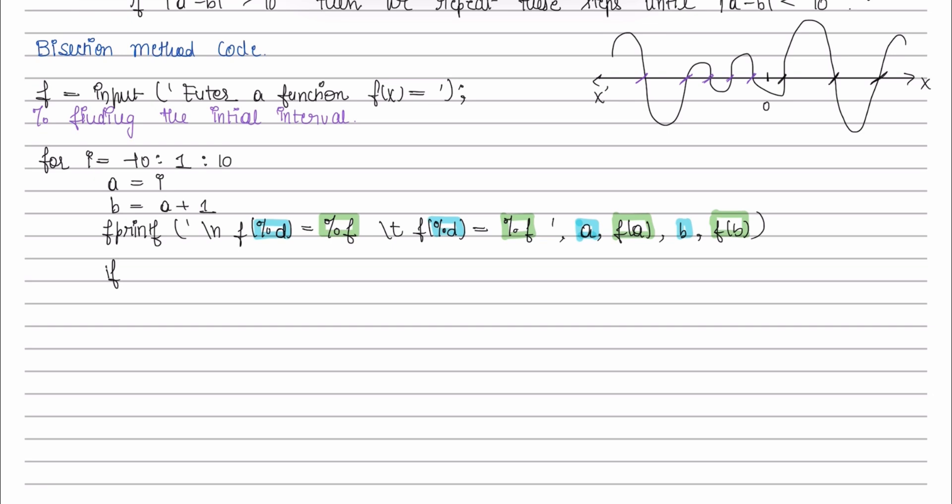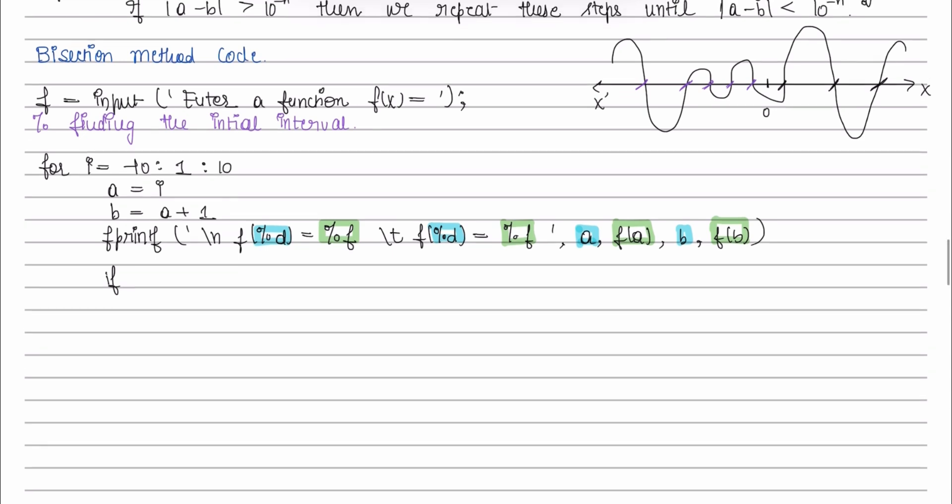Now, we have to check if the intermediate value property holds between a and b or not. If the intermediate value property holds, then f of a and f of b are of opposite signs. And if f of a and f of b are of opposite signs, then their product is always going to be negative.